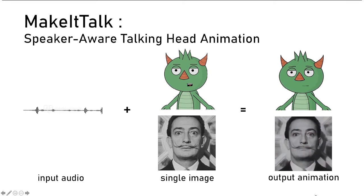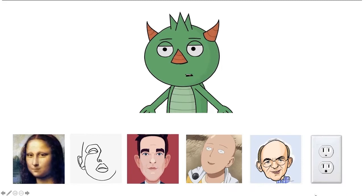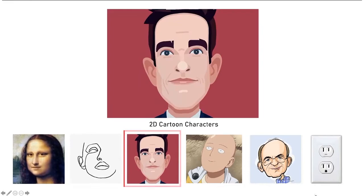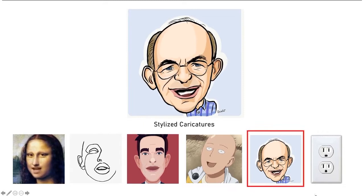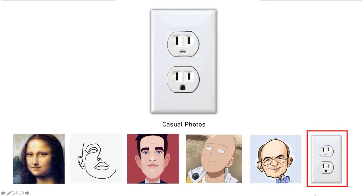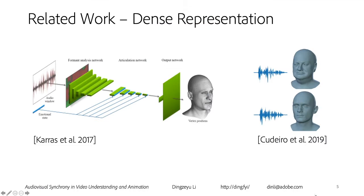Our method estimates both facial expressions and head poses. We can animate artistic paintings, random sketches, 2D cartoon characters, Japanese mangas, stylized caricatures, and casual photos. Our method takes a single audio file plus a regular JPEG image as input, and we can generate talking head animation. There are a lot of related works in this domain, and I will only talk about a few that are closely related to ours.